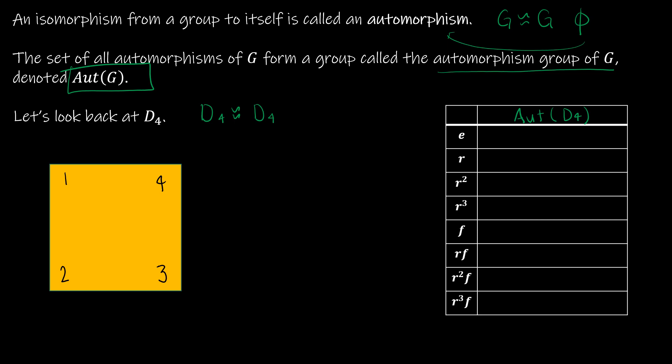We even revisited it in Chapter 6. E is the identity: 1 goes to 1, 2 goes to 2, 3 goes to 3, 4 goes to 4 — nothing happened, everything stayed the same. However, E is an automorphism of D4 — it's an isomorphism from D4 to D4, which makes it an automorphism.